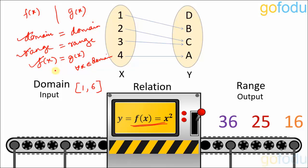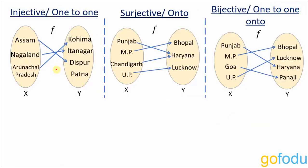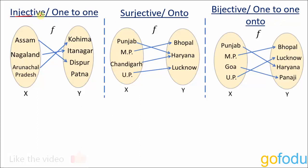Moving on to classification of functions. They can be injective, also called one-to-one; or surjective, also called onto; or bijective, meaning both one-to-one and onto — that is, both injective and surjective.